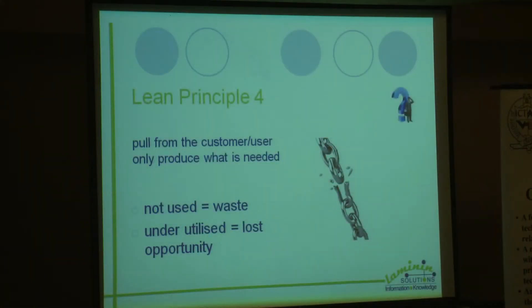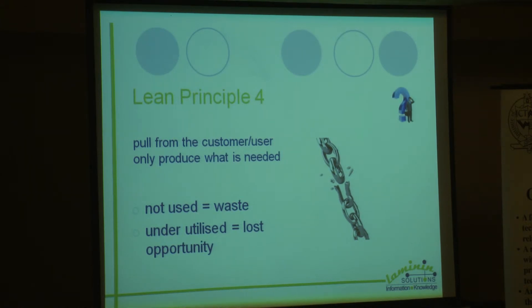Moving on to lean principle number four — pull from the customer. You as a user can define what will happen and which information you get. If you allow your organization to adopt a mindset where the user determines what they see and how they see it — and that one user can see it differently than another — then you will complete the cycle whereby you create a new culture in your organization, focusing on information as a process of lean, as a culture of lean. This is a very different approach than the one we have so often in business today.